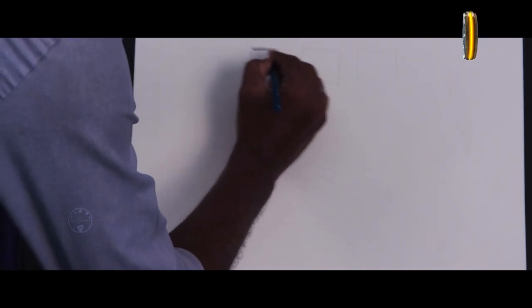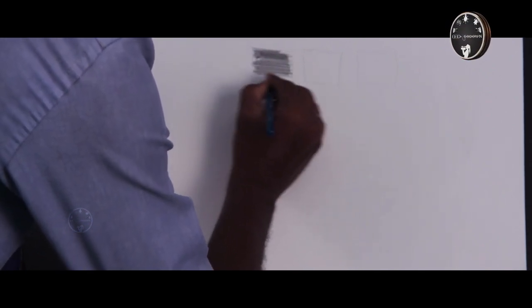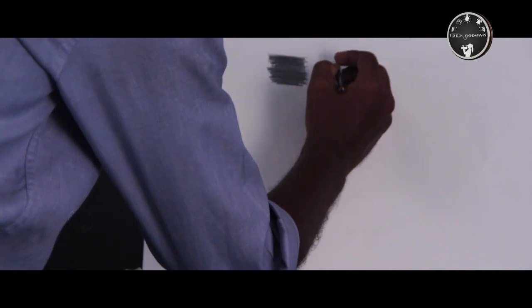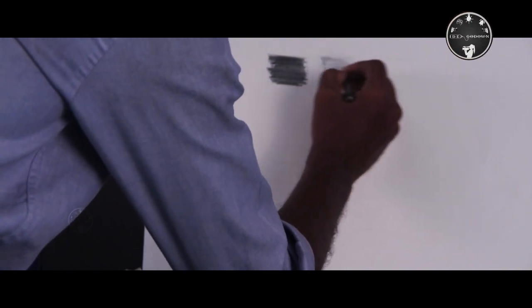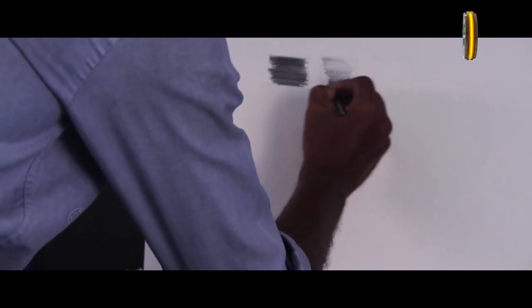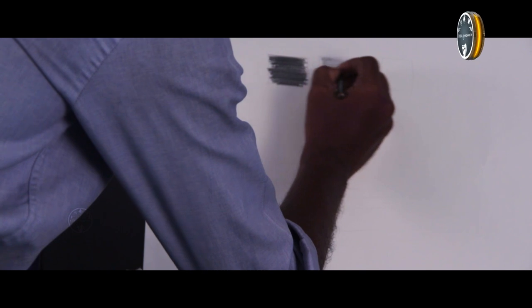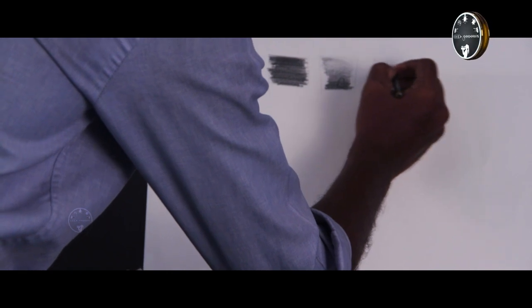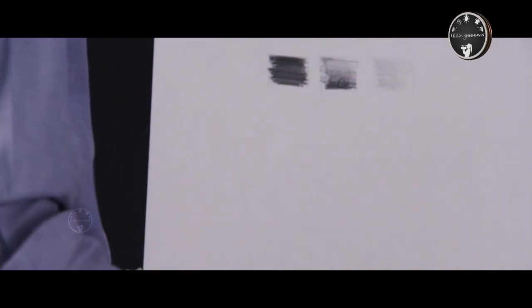We can control everything in the hand. This is dark. Now, we can use the shading in the hand to fill the shading.